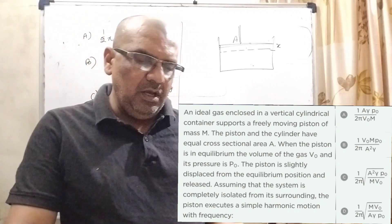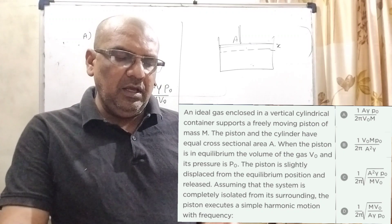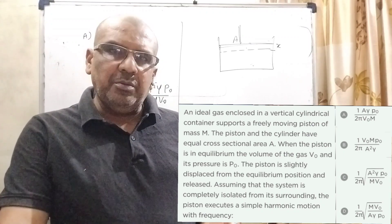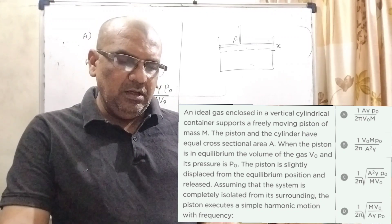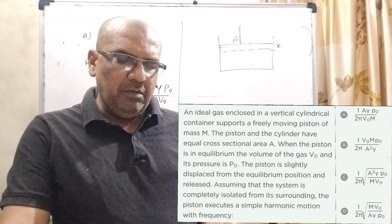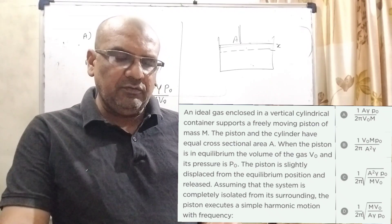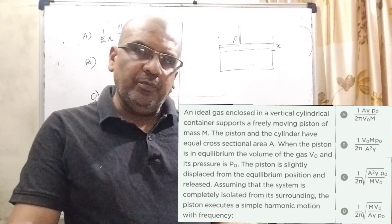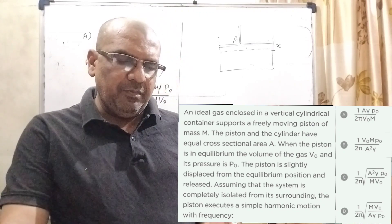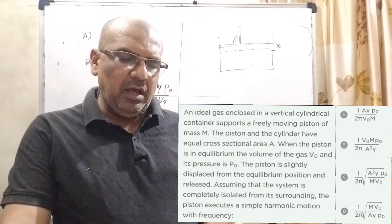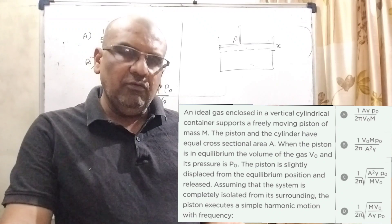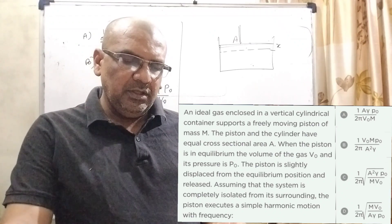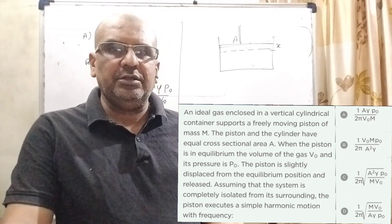Option A: 1 upon 2π times A·γ·P0 upon V0·M. Option B: 1 upon 2π times V0·M·P0 upon A²·γ. Option C: 1 upon 2π times root of A²·γ·P0 upon M·V0. Option D: 1 upon 2π times root of M·V0·A·γ·P0.